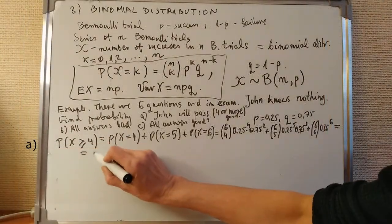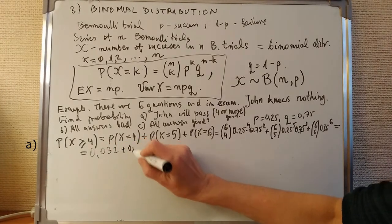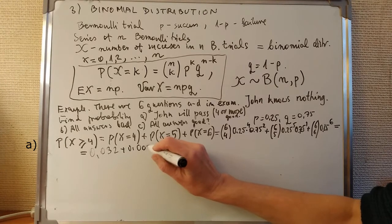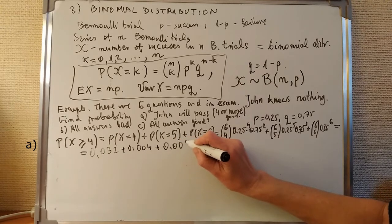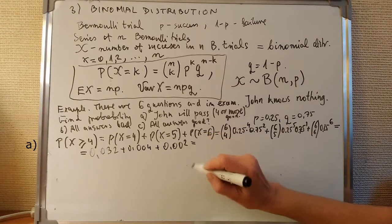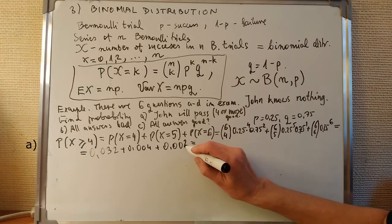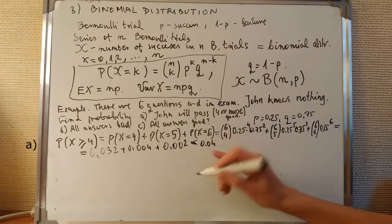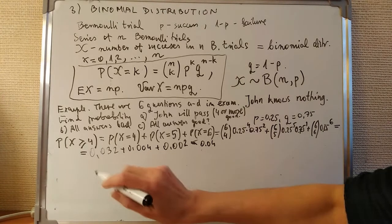So this is approximately 0.0032, plus 0.0004, plus 0.0002. This is really very, very small — it is less than 0.004, less than four percent. So John is really in a very bad position.